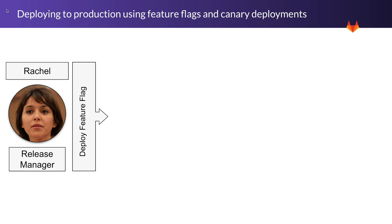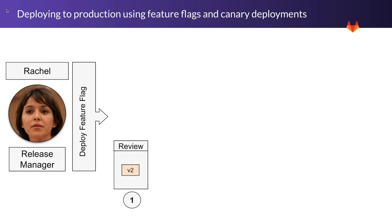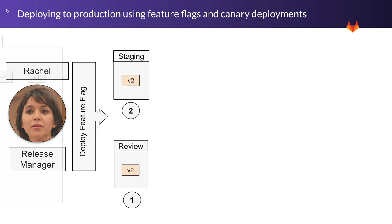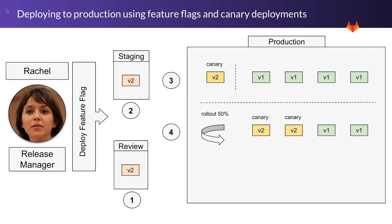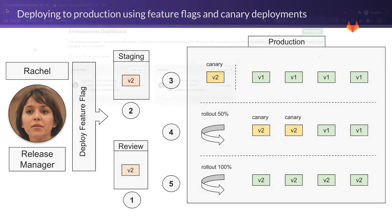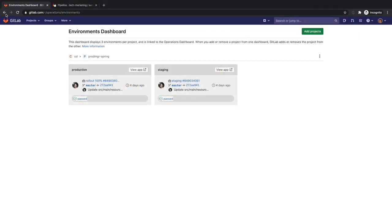She can check that the feature flag is enabled in the review and staging environments and then start an instance of the latest release as a canary deployment before rolling it out to production in an incremental fashion, first at 50% and then at 100%.